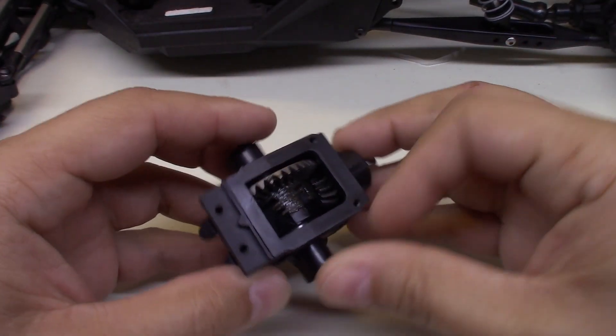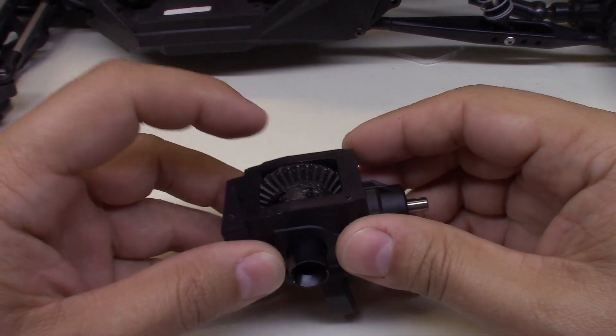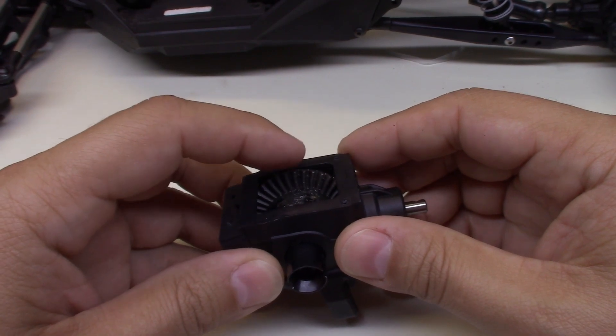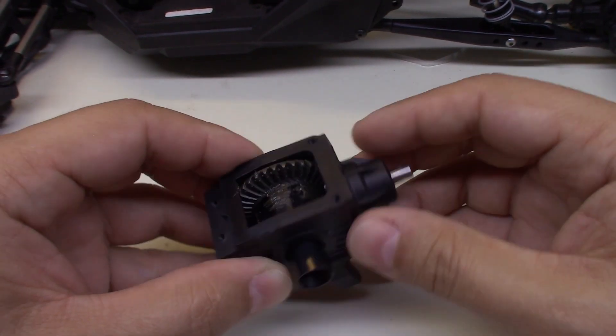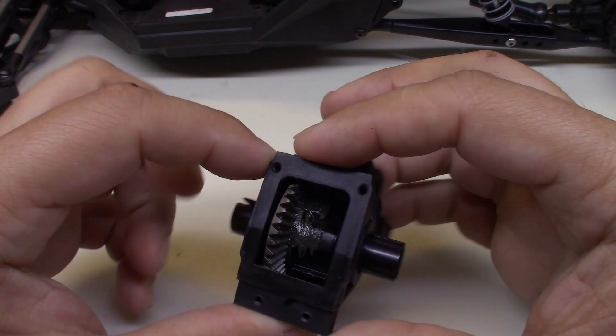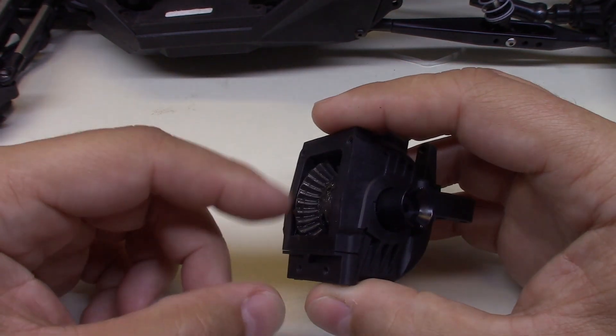Hey guys, this is the ring and pinion out of my Axial Yeti. I recently replaced the ring gear and the pinion gear with a set from Axial, their upgraded ring and pinion.